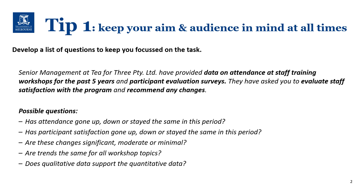You might start by asking: has attendance gone up, down or stayed the same in this period? Has participant satisfaction gone up, down or stayed the same? Are these changes significant, moderate or minimal? Are trends the same for all workshop topics? Does qualitative data support the quantitative data? Approaching the task in this way will help you to take a critical stance.